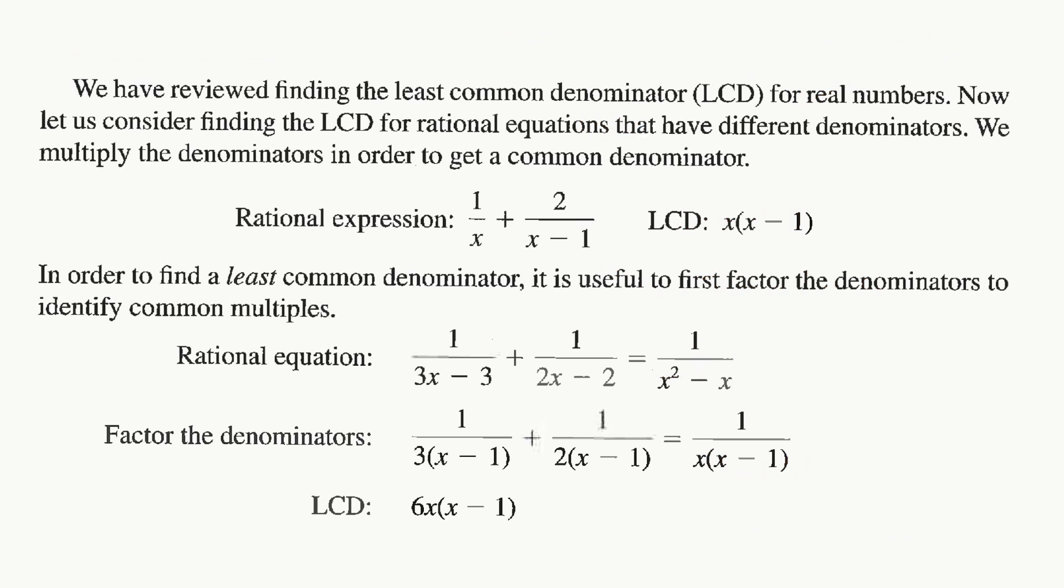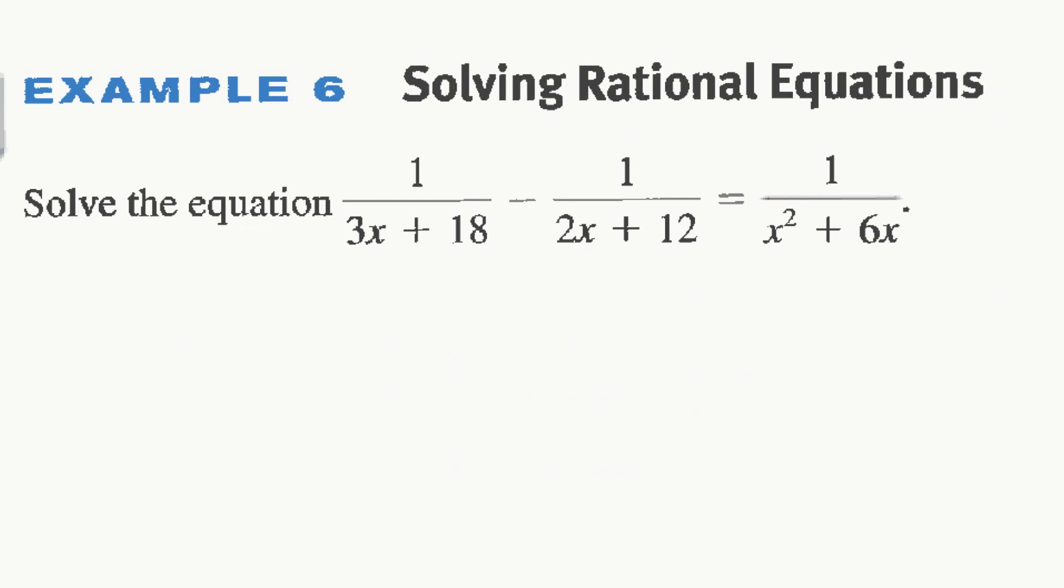Okay, so we've talked about LCDs for real numbers, but how about for equations with different denominators? So if you have x and x minus 1, the lowest common denominator means multiply them together. So every single denominator just gets multiplied together. But one thing you're going to want to do first is if you have an equation like this, can you factor each of the denominators to see if anything's in common? So if you factor 3x minus 3, you can pull a 3 out, and you're left with x minus 1. Here you can pull a 2 out, you're left with x minus 1. Here you can pull an x out, you're left with x minus 1. So x minus 1 is your least common denominator. 3 times 2 times x is 6x. Let's try it.